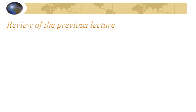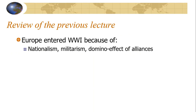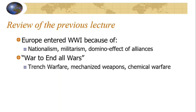A review of the previous lecture: Europe entered into World War I because of a variety of reasons — nationalism, putting your nation's interests above that of the world; militarism, using your military as a form of diplomacy; and the dominant effect of alliances. We had the Allies versus the Central Powers, or the Triple Alliance. It was called the War to End All Wars, not just because of the hope that this global war would be the last of its kind, but also because of the type of warfare fought: trench warfare with no man's land, mechanized weapons relying on gasoline and machine guns, airplanes, the Zeppelin, and chemical warfare such as chlorine and mustard gas.